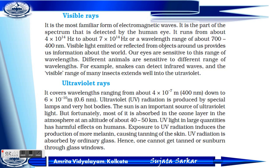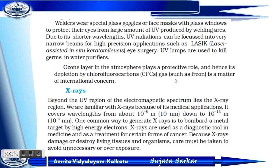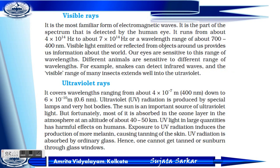Our eyes are very sensitive to this range of wavelengths. Different animals are sensitive to different ranges — for example, snakes can detect infrared waves, and the visible range of many insects extends well into the ultraviolet. Ultraviolet rays cover wavelengths ranging from about 4×10^-7 meters down to about 6×10^-10 meters.